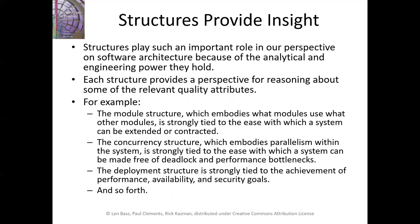Structures play an important role in our perspective on software architecture because of the analytical and engineering power they hold. Each structure provides perspective for reasoning about relevant quality attributes — things like performance, security, availability, and usability. For example, the module structure, which embodies what modules use what other modules, is tied to the ease with which a system can be extended or contracted. The concurrency structure, which embodies parallelism within the system, is tied to the ease with which a system can be made free of deadlock and performance bottlenecks. The deployment structure is tied to the achievement of performance, availability, and security goals.